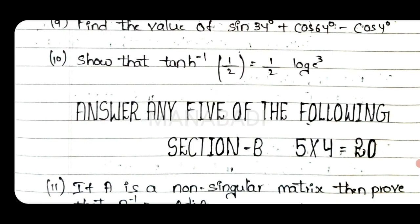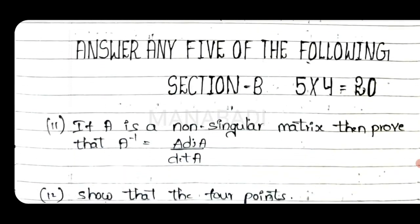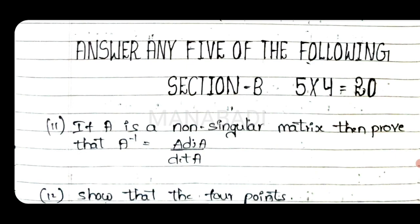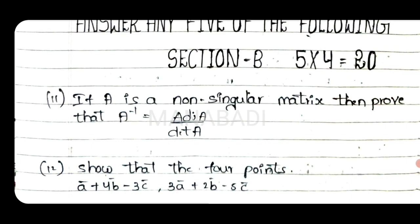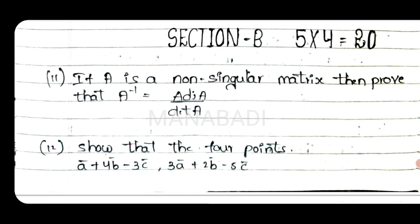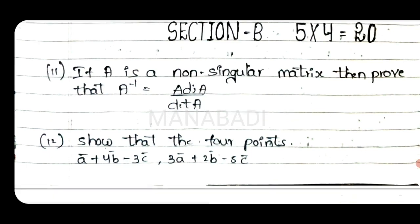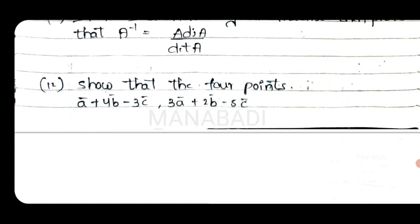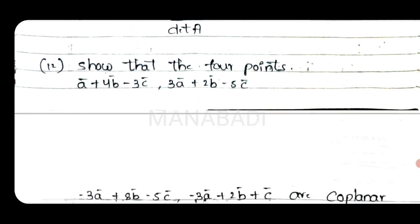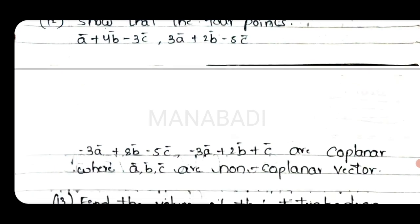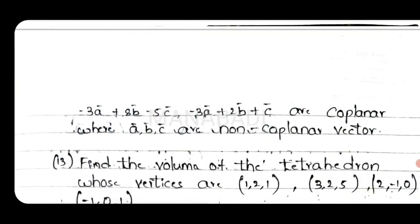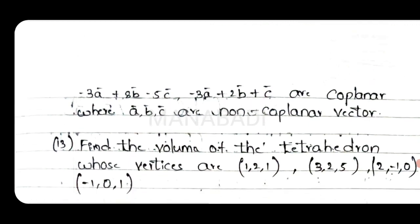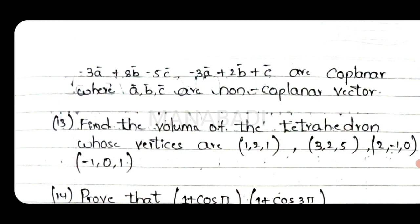This is the question. I will talk about very short answer questions. Section B — answer any five of the following. If A is a non-singular matrix, prove that A inverse equals adjoint A by det A. Next, show that the four points — A vector plus 4B minus 3C vector, 3A vector plus 2B vector minus 5C vector — show that minus 3A plus 8B and minus 5C, minus 3A plus 2B plus C are coplanar, where A, B, C are non-coplanar vectors.